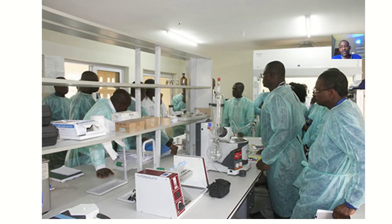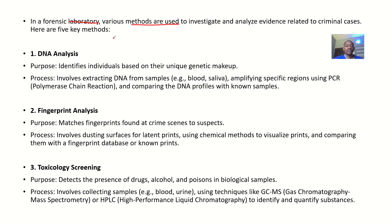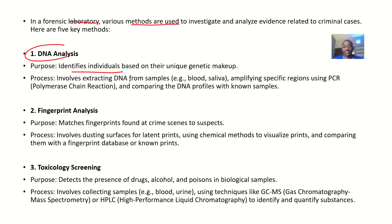Looking at the five methods, the first is DNA analysis. The purpose of DNA analysis is to identify individuals based on their unique genetic makeup. For example, if a pregnant woman wants to confirm paternity, a DNA test can be done — that's forensic. The process involves extracting DNA samples from the body — it could be blood or saliva — then amplifying specific regions using the polymerase chain reaction (PCR).